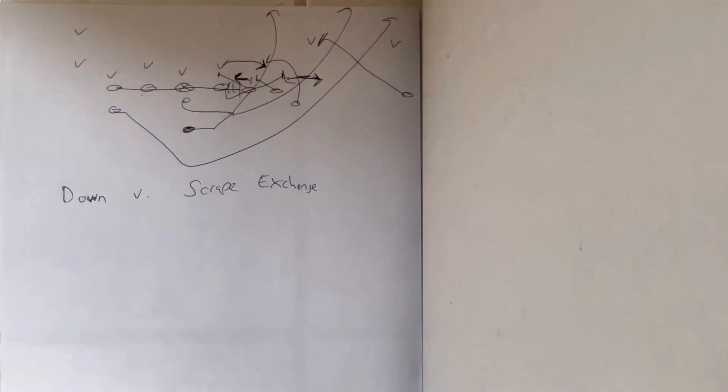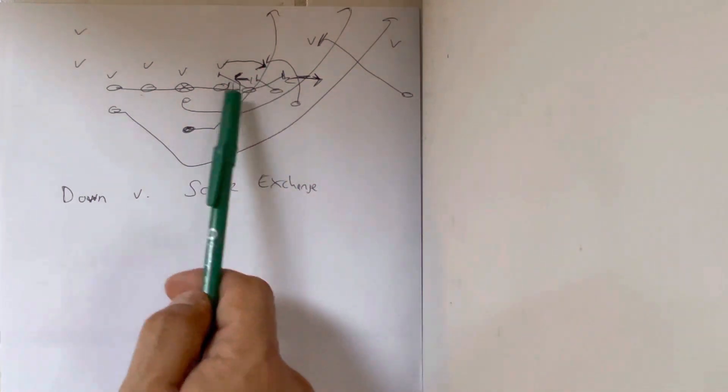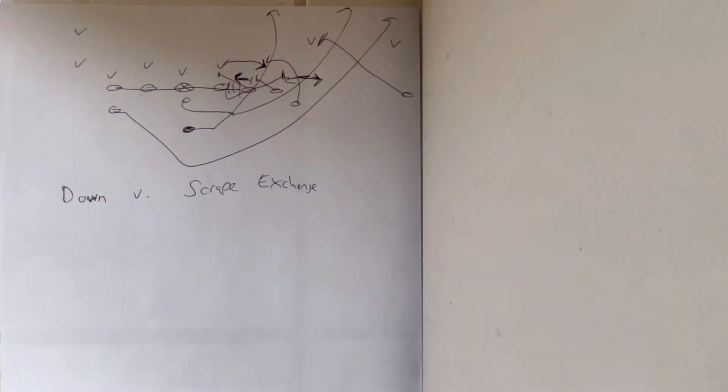So when one takes the dive and two takes the pitch, they run to that massive void in between with the down. So there you go, that's down versus the scrape exchange. Coaches, if you want to learn how to run Air Force's offense the right way the first time—